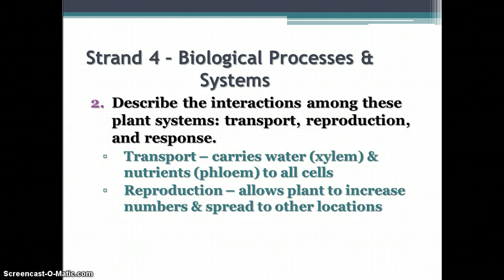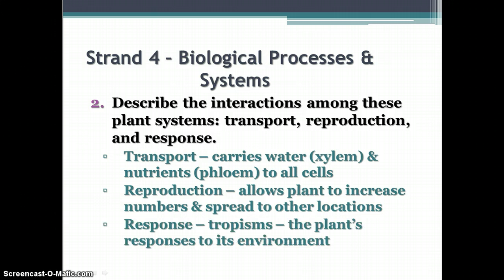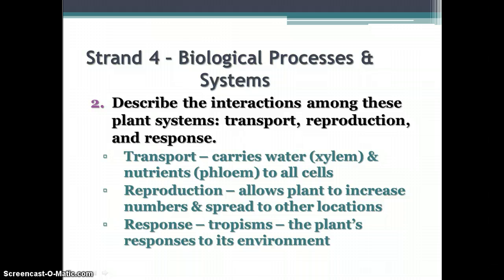Reproduction allows the plant to increase numbers and spread to other locations. It is, in some ways, a response of the plant to that kind of stimulus. The response includes the tropisms — the plant's response to its environment. This includes phototropism, as it moves toward light; gravitropism, as stems grow up and roots grow down; and thigmotropism, where the plant responds to touch. These are all responses to the environment.